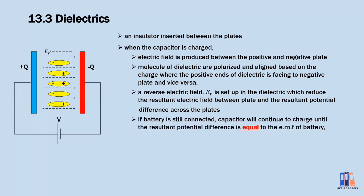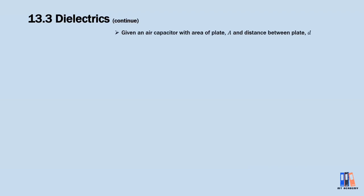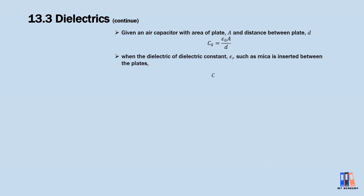If the battery remains connected to the capacitor, the capacitor will continue to charge until the resultant potential difference equals the EMF of the battery. For further analysis — if we have an air capacitor with area A and distance D, its capacitance is C₀ = ε₀·A/D. When a dielectric is inserted, the permittivity becomes ε = εᵣ·ε₀, and substituting gives C = εᵣ·C₀.